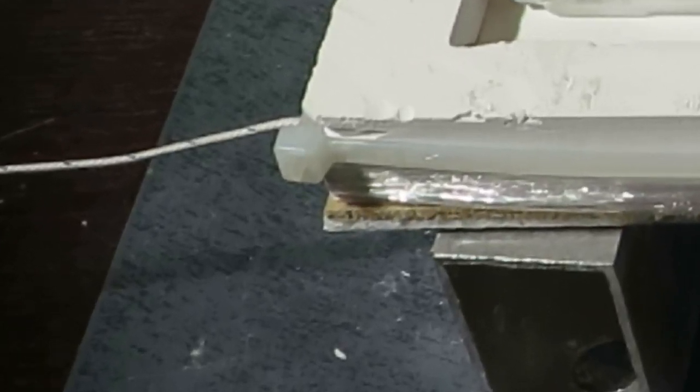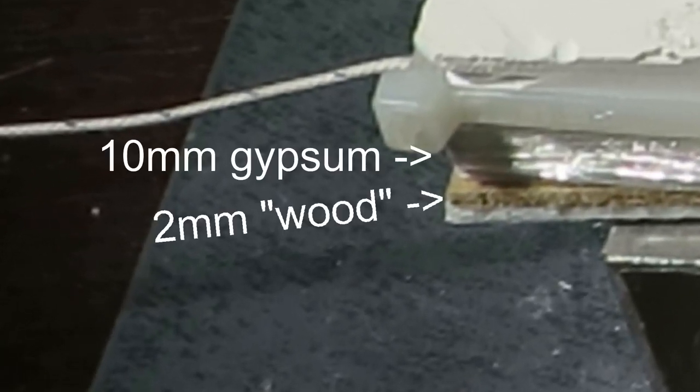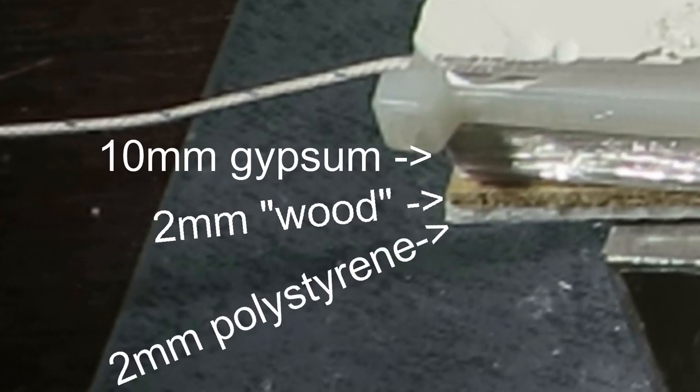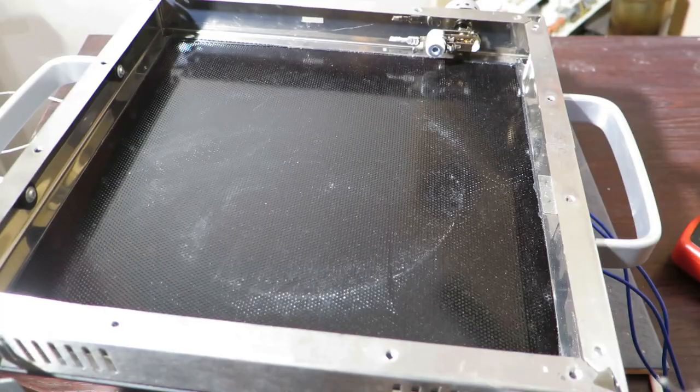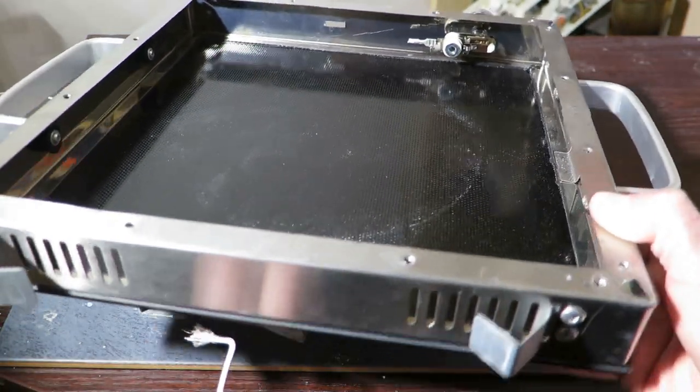Now to explain better this stack. So I have 10mm thick gypsum piece on the bottom. Underneath that there's 2mm of wood. And underneath that is 2mm thick piece of polystyrene. On top of this stack I will place quartz glass plate. You can get this from about any ceramic hot plate.